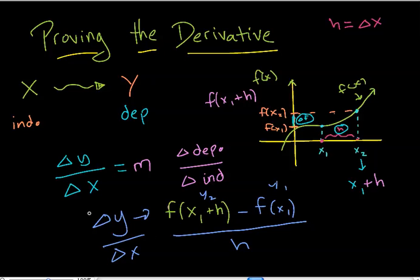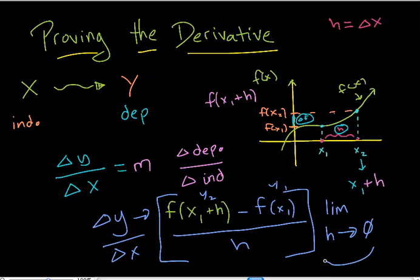And the whole idea of a derivative is, well, this whole thing right here, what happens when h is really tiny, when h is almost zero. So we're going to take the limit as h approaches zero of this guy right here. And we'll start with that in the next video.